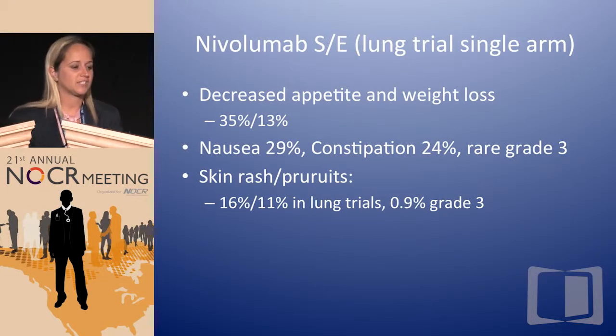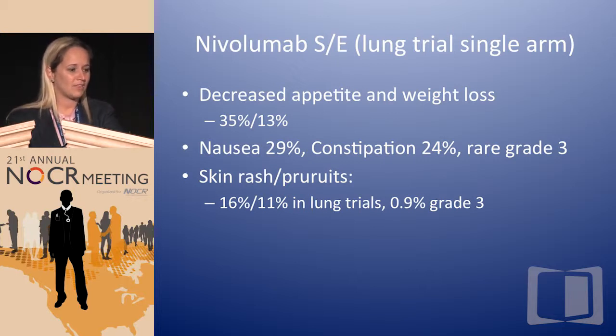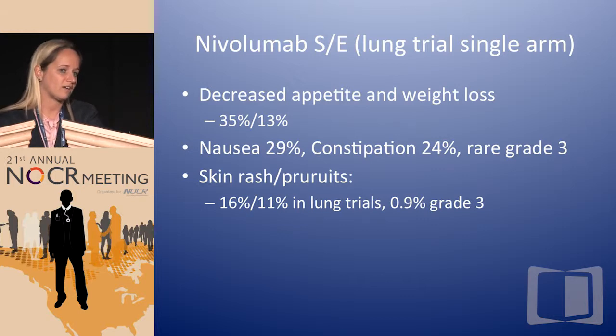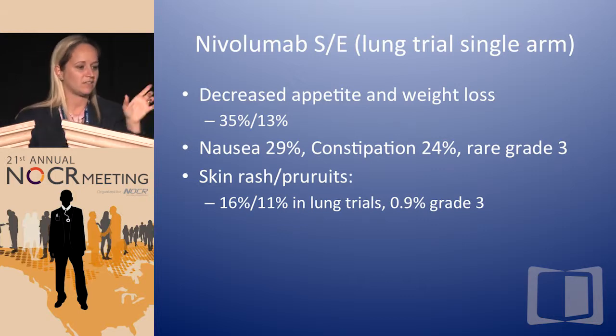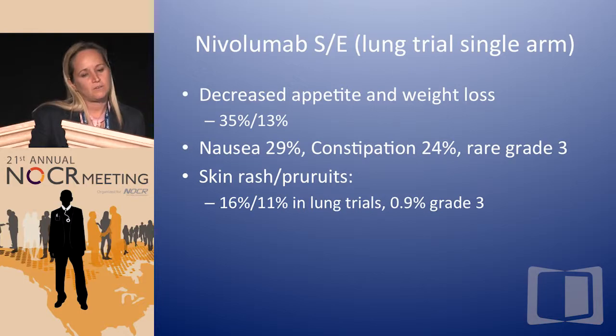Another finding of interest is decreased appetite and weight loss — 13% of patients had significant weight loss in the single-arm lung trial, and we don't fully understand why. There was some nausea and constipation, rarely grade 3. Skin rash or pruritus occurred in 16% and 11% respectively in the lung trial, with only 0.9% being grade 3. This will not be your typical EGFR rash — it should be a grade 1 or 2 rash easily treated with topicals, without needing oral steroids or oral antibiotics for the most part.